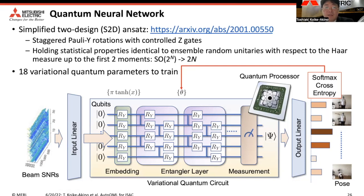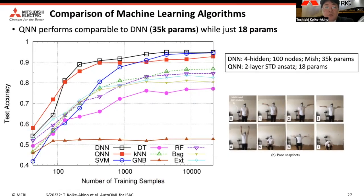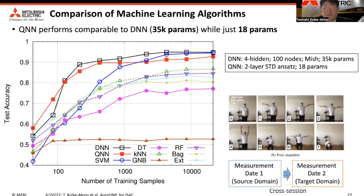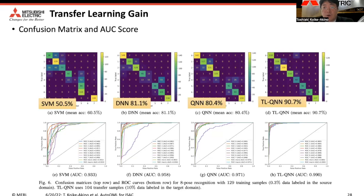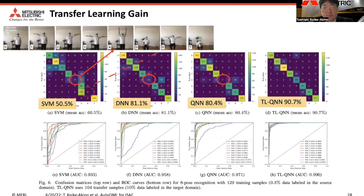The quantum processor produces a softmax score for each category of human pose. This QNN has only 18 variational quantum parameters to train. We demonstrated that the quantum neural network is comparable to state-of-the-art deep neural network performance, even though the number of parameters is significantly fewer. Looking at the confusion matrices for SVM, DNN, QNN, and transfer learning, there is a large confusion for poses 4 and 6. Using DNN or QNN, we resolve pose 6. However, pose 4 remains confusing. Then using quantum transfer learning, we resolve this confusion, achieving good accuracy and an AUC score of 0.99.